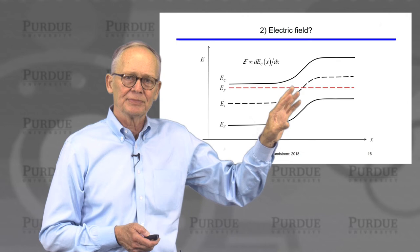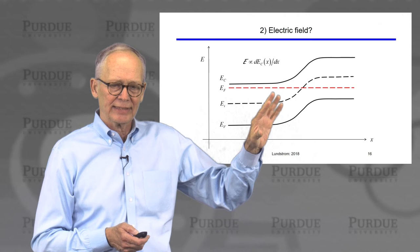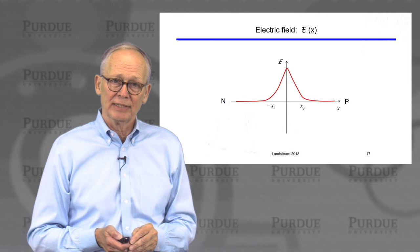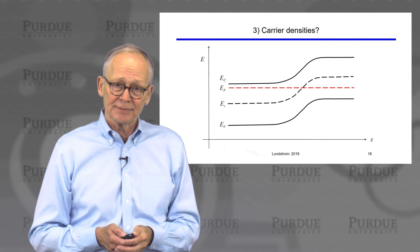For the electric field: the electric field is proportional to the slope of the conduction band or valence band, so all we have to do is take the slope. It's zero in the N-type region, it's nonzero in the transition region, and it's zero in the P-type region. So if we plot the electric field versus position, we would see that it peaks in the transition region.